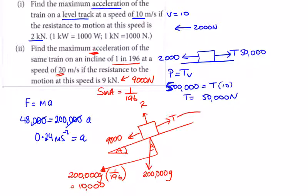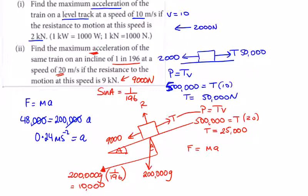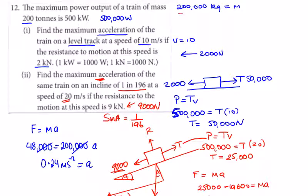We need the tractive effort T. Power equals T times v. The power is 500,000, equal to the tractive effort times the speed of 20, so the tractive effort is 500,000 divided by 20, which is 25,000 newtons. Resolving forces: 25,000 driving forward minus 10,000 and 9,000 — that's 19,000 resisting — equals mass times acceleration.